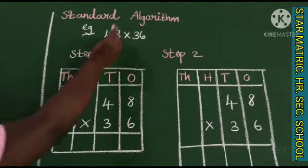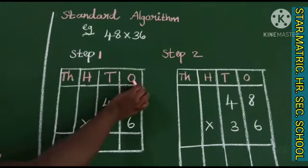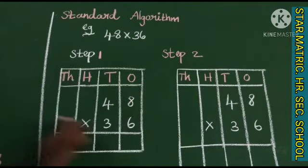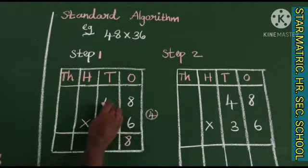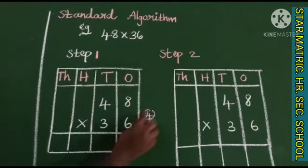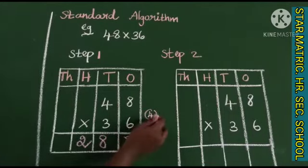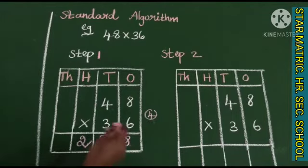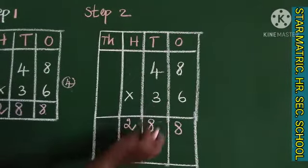The next method is the standard algorithm. The problem is again 48 into 36. This is the first step. We use a place value chart with columns for 1, 10, 100, and 1000. This chart helps us organize the digits.